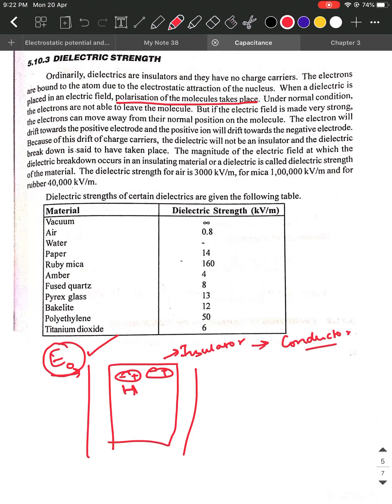So whatever is the value of the electric field at which this kind of phenomenon is taking place, meaning the dielectric starts behaving like a conductor, is what is called as breakdown. You will hear this word again and again. Breakdown literally does not mean that the dielectric is going to break into pieces. Breakdown means the insulating property of the dielectric is lost and it starts behaving like a conductor.